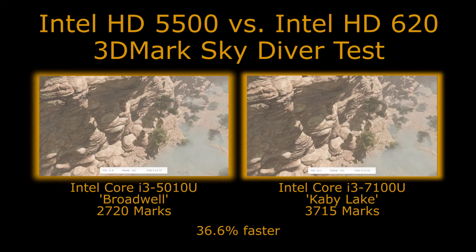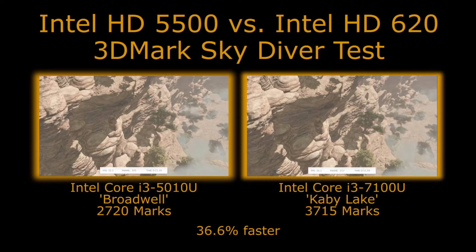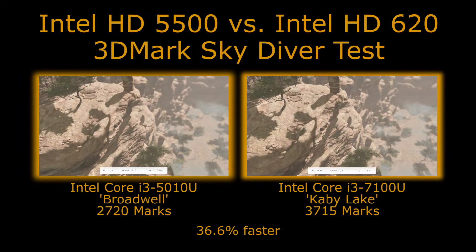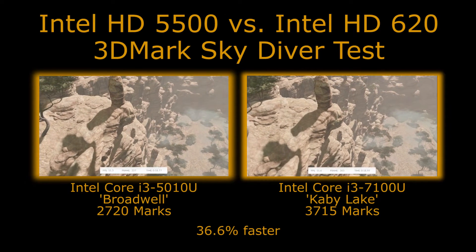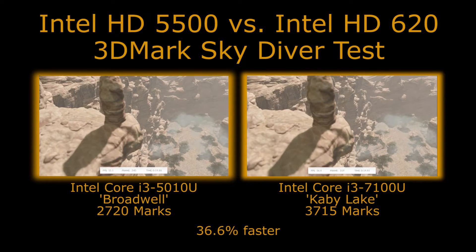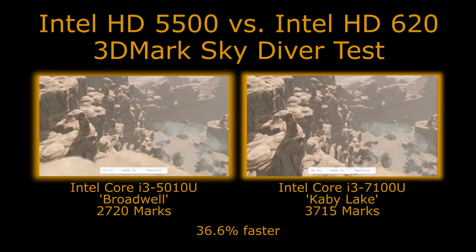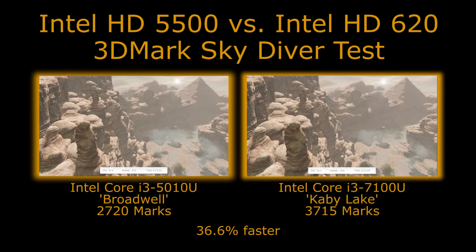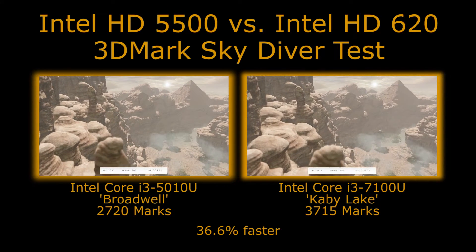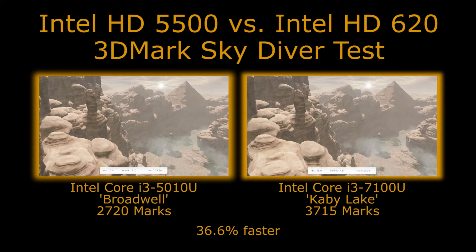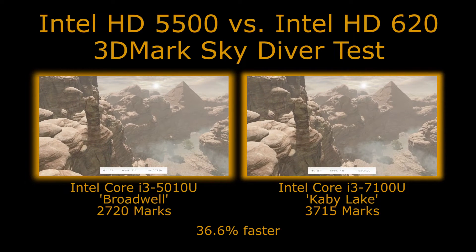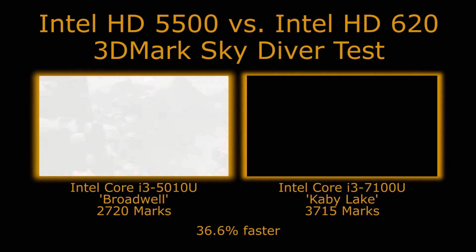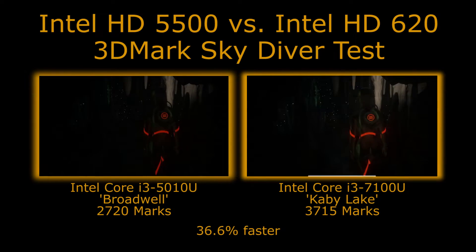So here we have an i3-5010U in a NUC chassis up against a Core i3-7100U in a Dell Inspiron 15 laptop, and we can see here there's actually quite a big difference in percentage terms between the two.